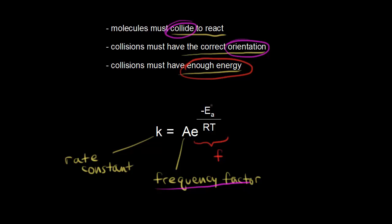We symbolize this fraction by lowercase f — the fraction of collisions with enough energy for the reaction to occur. F depends on the activation energy, Ea, which needs to be in joules per mole. R is the gas constant, and T is the temperature in Kelvin. Let's see how changing the activation energy or the temperature affects the fraction of collisions with enough energy.